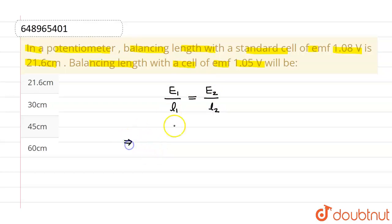Now here, let us suppose E1 is 1.08V and L1 is 21.6 cm, and that must equal 1.05 divided by L2.